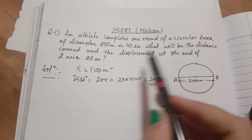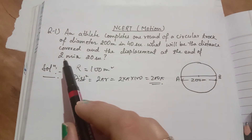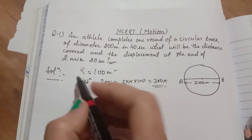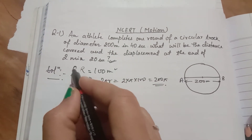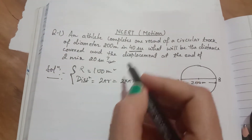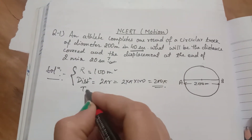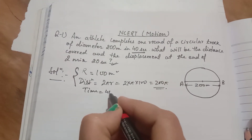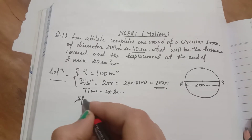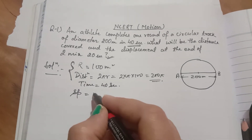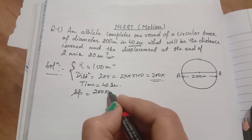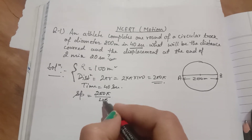You have to find the distance at the end of 2 minutes 20 seconds, so first convert the time and find the speed of the athlete. The distance and time are given — time is 40 seconds. Speed equals distance divided by time, so 200π divided by 40.